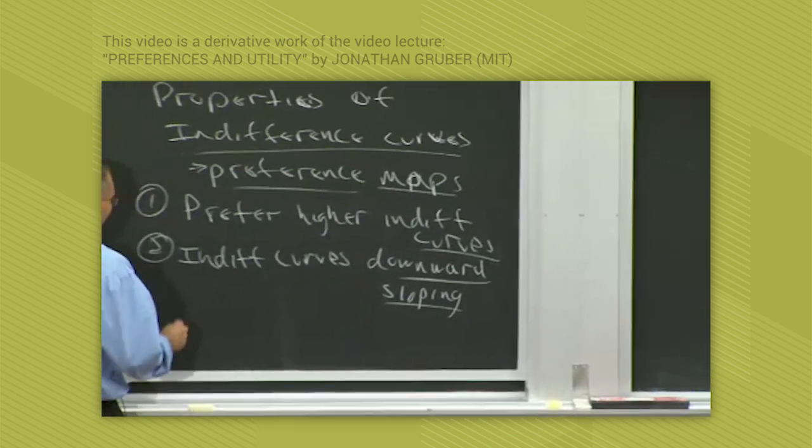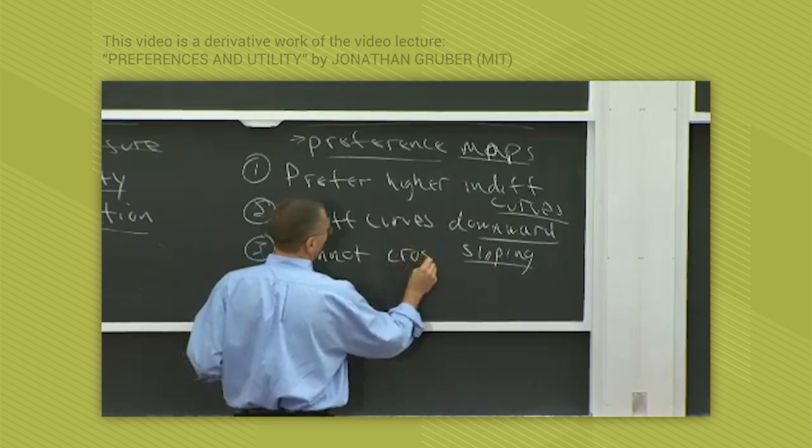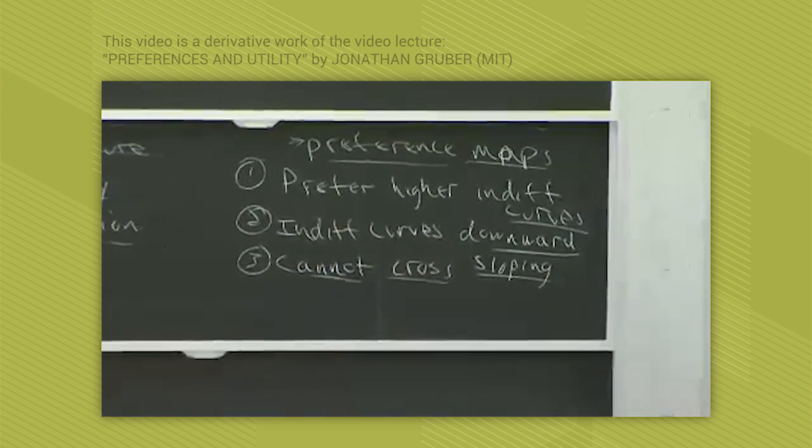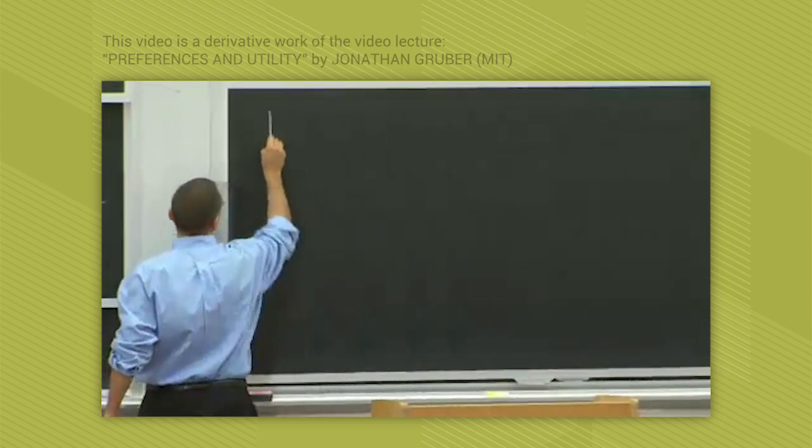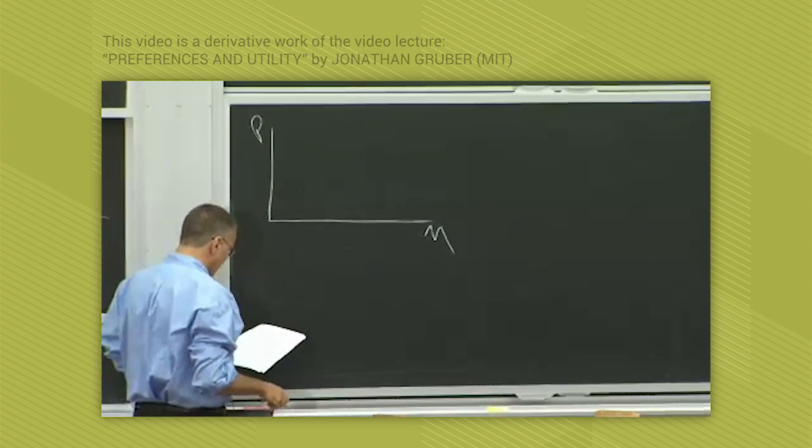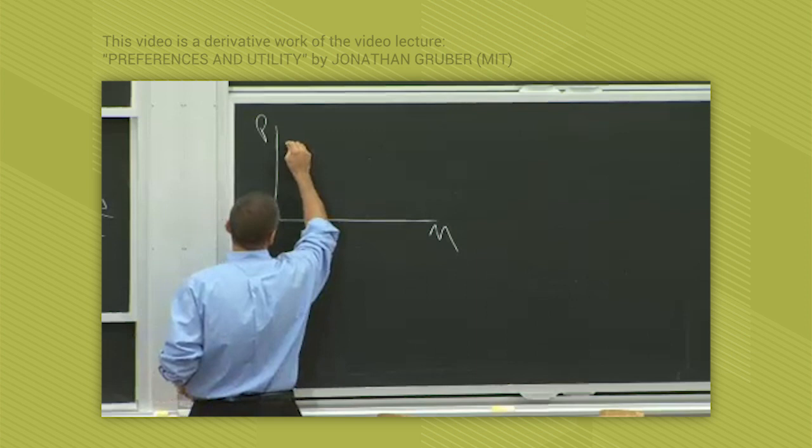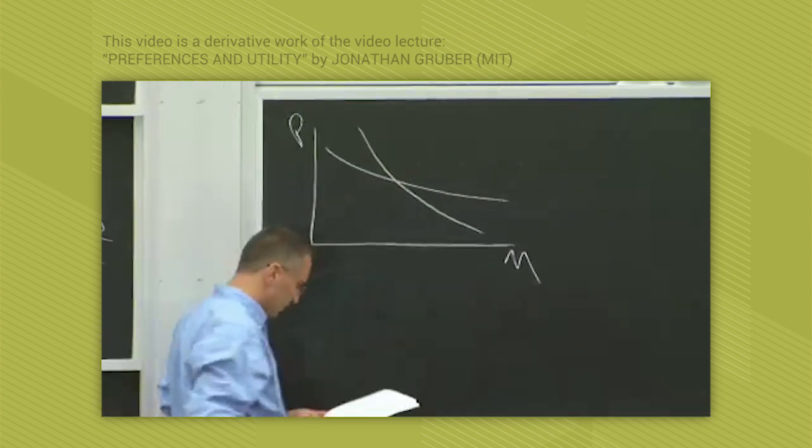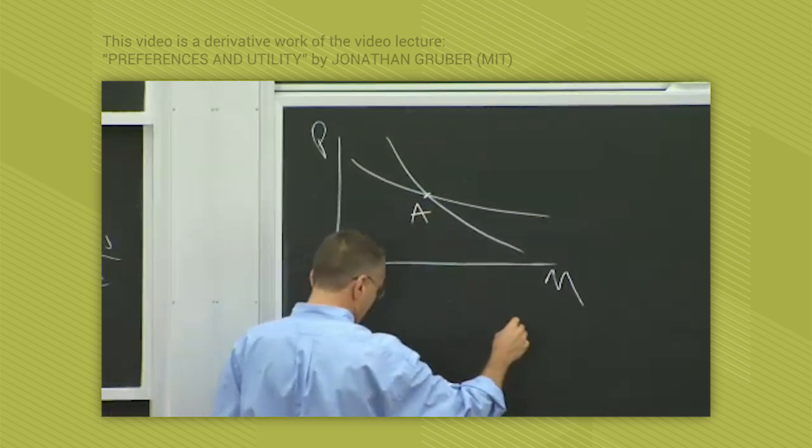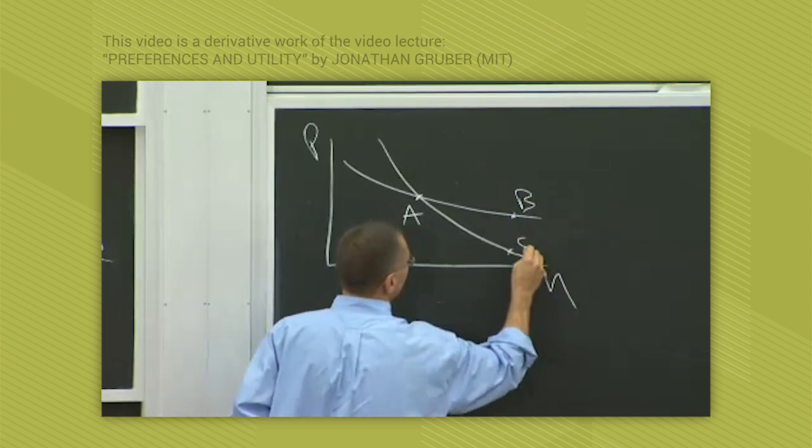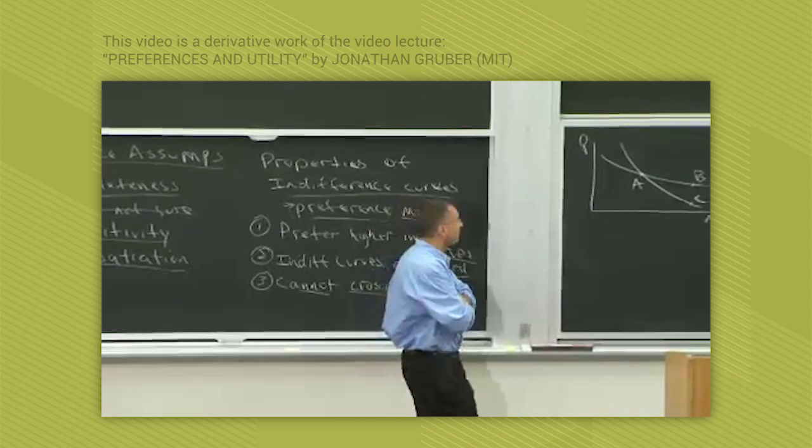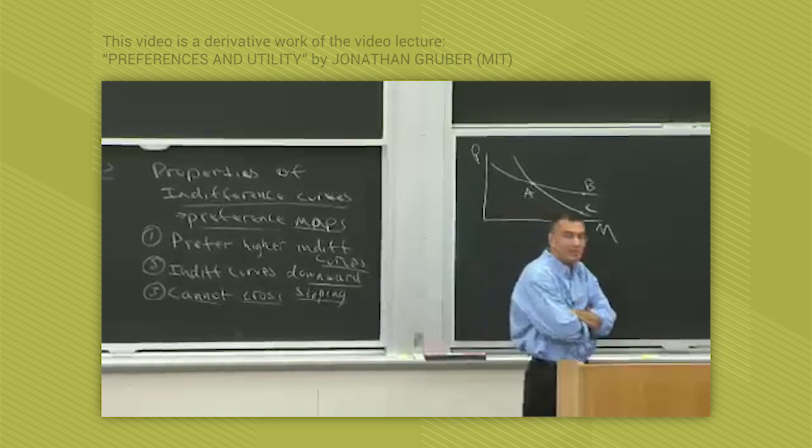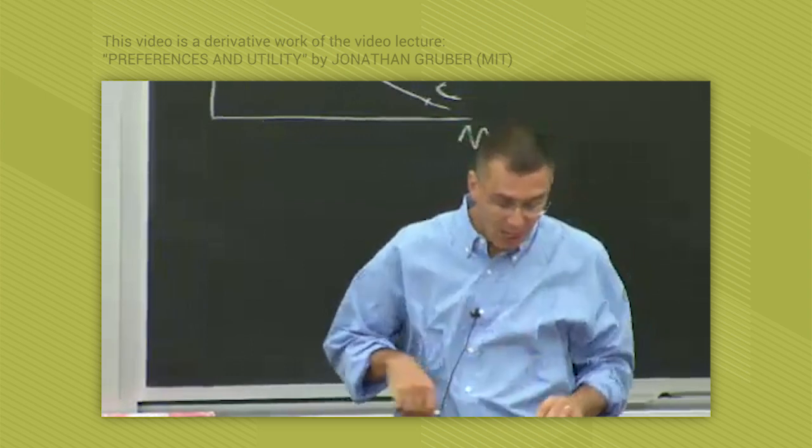The third property is that indifference curves cannot cross. Why can't indifference curves cross? Imagine you have your pizza and movies axes, and one indifference curve that looks like this, and one that looks like this. Label these points A, B, and C. Transitivity says I must be indifferent between B and C through the logic you just laid out. But I can't be indifferent between B and C, because B dominates C. B has basically the same number of movies but more pizza, so I must like B better. So by the combination of transitivity and non-satiation, indifference curves can't cross.